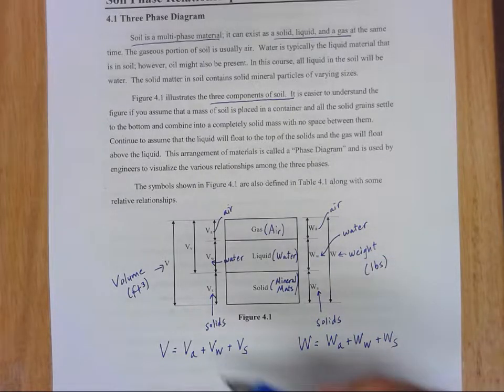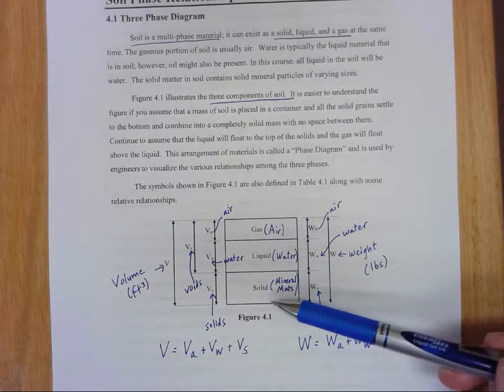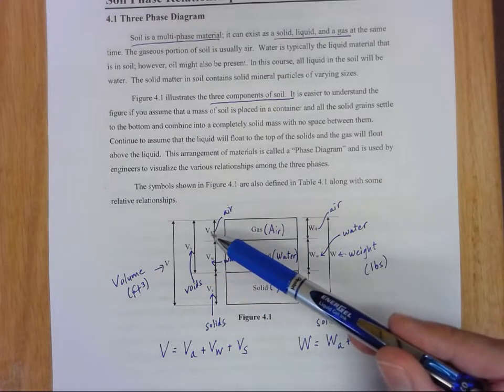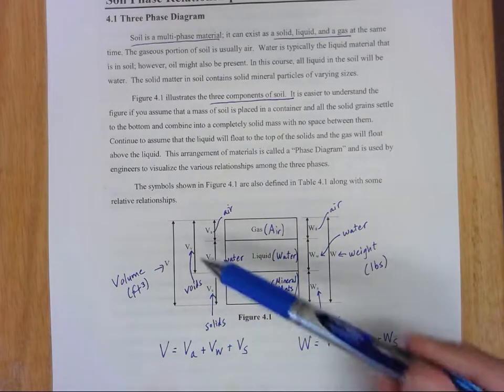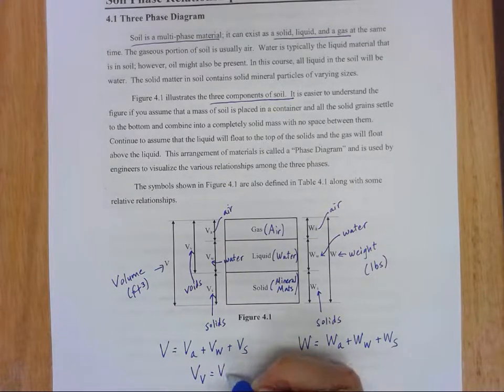We have one more relationship that's shown on this diagram. It stands for voids. And what voids are in the soil are just the empty space where there's no solids. So voids are made up of air and water. And so we can also see from this relationship here, that the volume of the voids is equal to the volume of air, plus the volume of water.